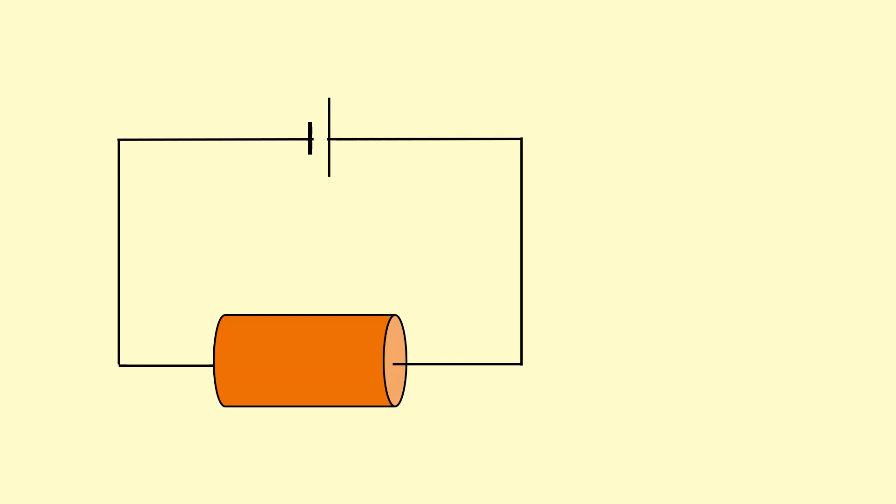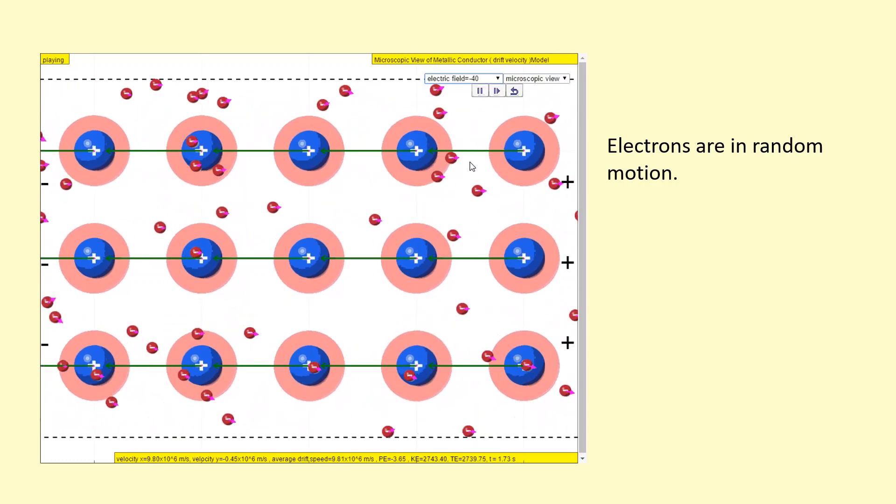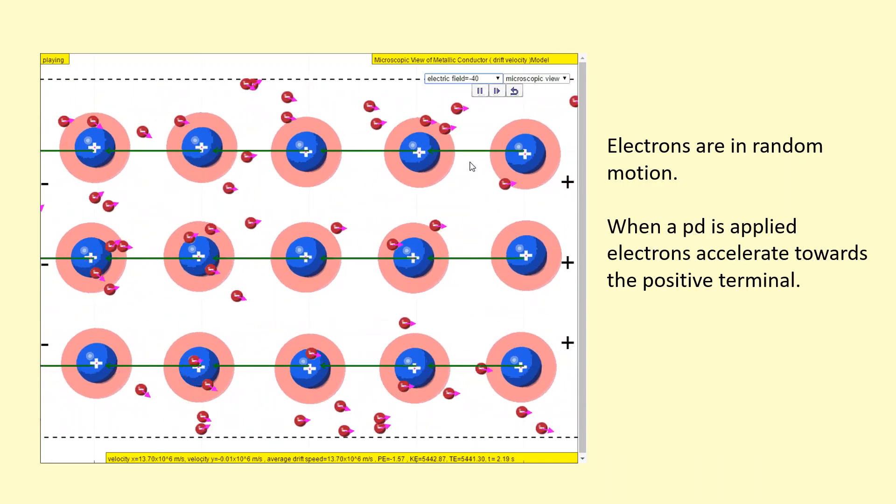What's actually happening when you apply a potential difference across a conductor like this? Firstly, the electrons are in random motion, but once you apply a potential difference, they start to accelerate towards a positive terminal.